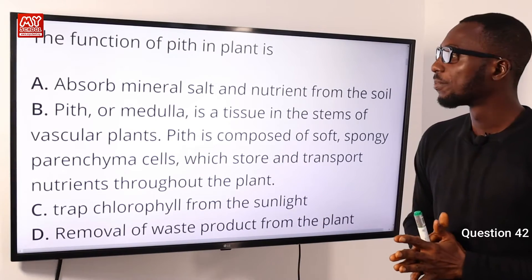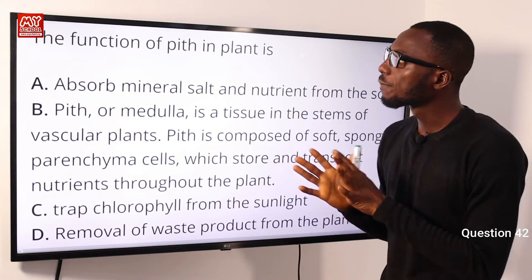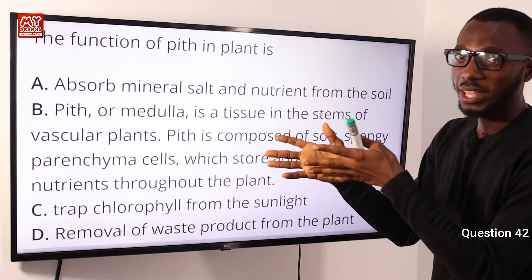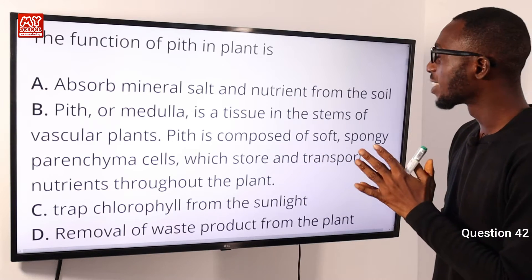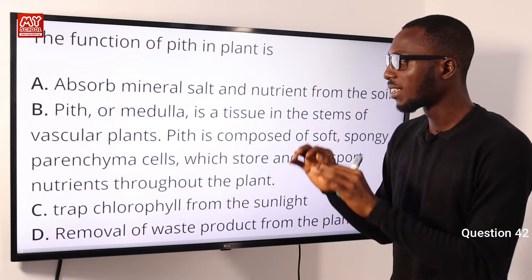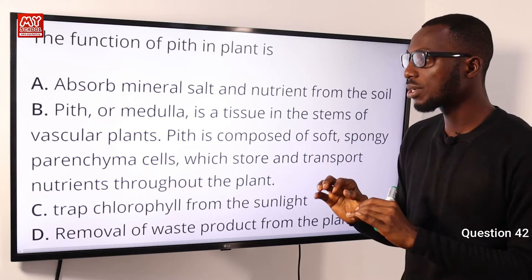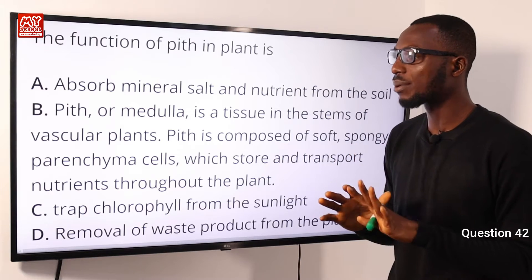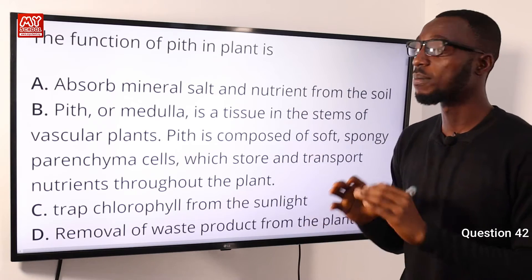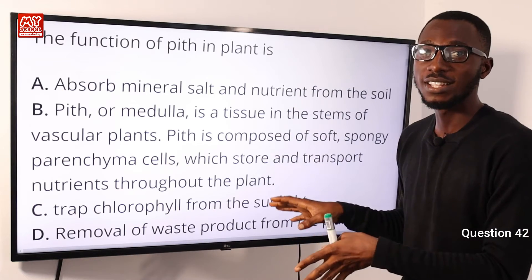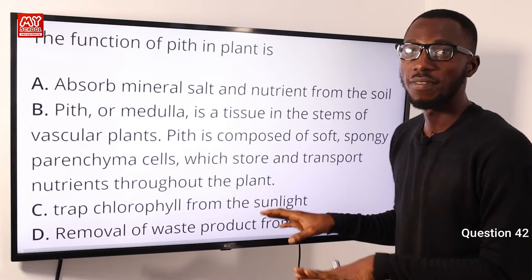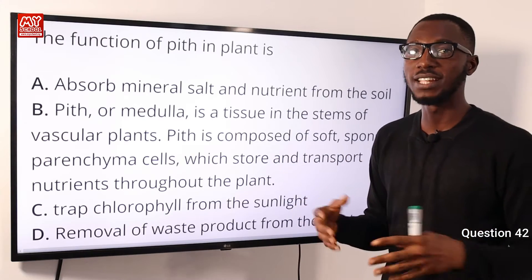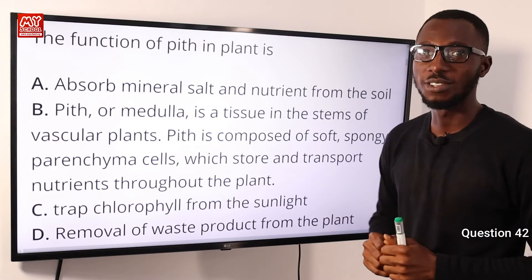Question 42: The function of pith in plants is what? The pith, or medulla, is a tissue in the stems of vascular plants. Pith is composed of soft, spongy parenchyma cells which store and transport nutrients throughout the plant. So basically, the function of pith is to store and transport water and nutrients throughout the plant. So option B is correct.